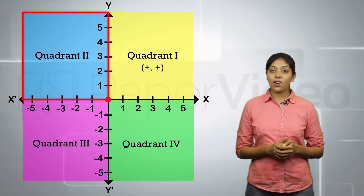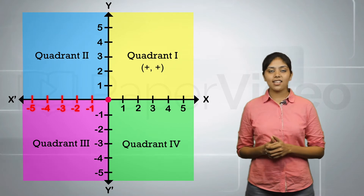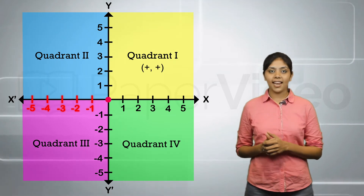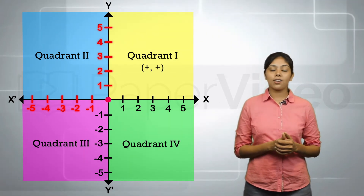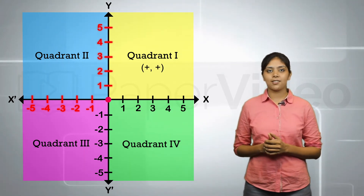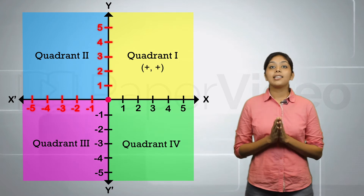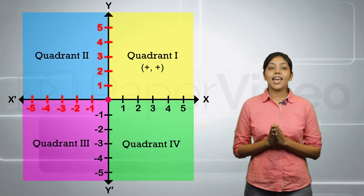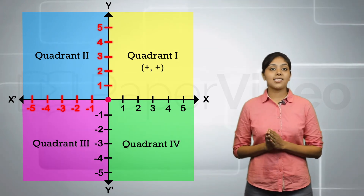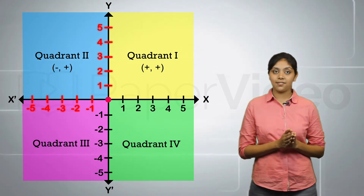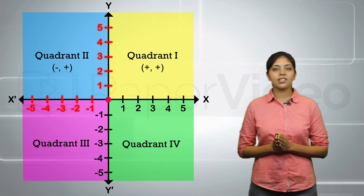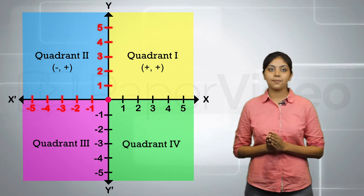In the second quadrant, the x-coordinate is negative but the y-coordinate is positive. This means that any point lying in the second quadrant will have its abscissa negative and ordinate positive.